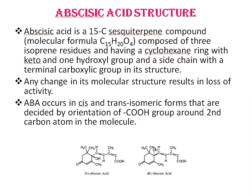Next is the structure of abscisic acid. Abscisic acid is a 15-carbon sesquiterpenoid compound with molecular formula C15H20O4. It is composed of three isoprene residues, having a cyclohexene ring with a keto and one hydroxyl group, and a side chain with a terminal carboxylic group in its structure.